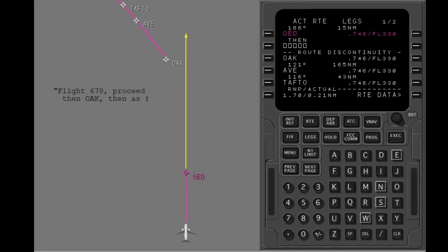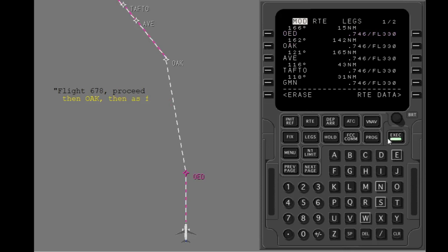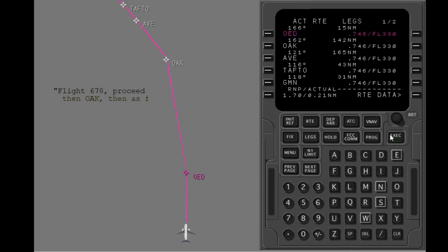Until the discontinuity is connected, there is no FMC course guidance after Rogue Valley, and the airplane continues on the same course it needed to get to Rogue Valley. Oakland is the desired waypoint after Rogue Valley. Thus, to obey the clearance and connect the discontinuity, put Oakland after Rogue Valley. Execute the modification. The discontinuity is now connected and course guidance is given after Rogue Valley. All of the waypoints below Oakland move up in the list.